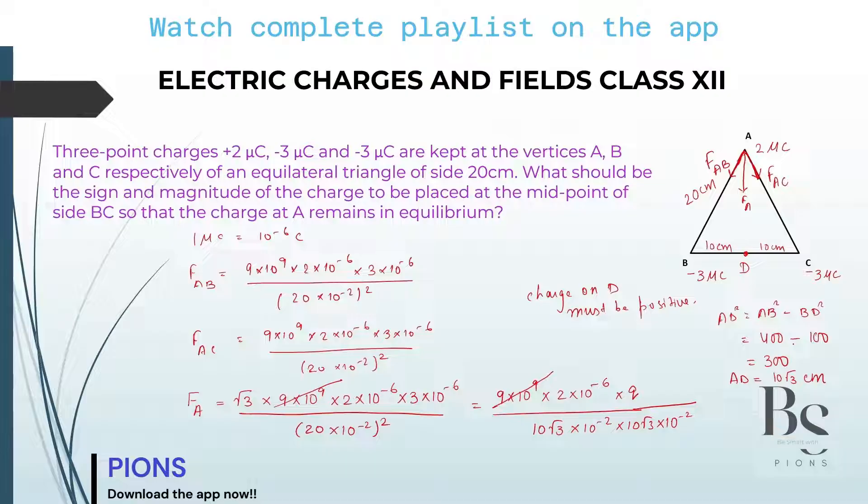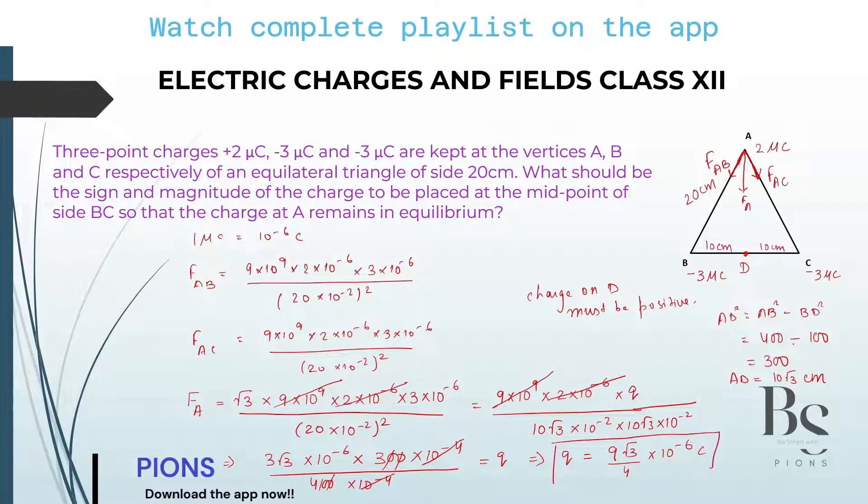Now let's cancel out the terms and find the magnitude of Q. This cancels with this. 2 into 10 to the power minus 6 cancels with 2 into 10 to the power minus 6. We left with 3 root 3 and let's take everything on the other side. 3 root 3 into 10 to the power minus 6 into the denominator on the left hand side. 10 root 3 into 10 root 3. It will be 100 into 3, 300, 10 to the power minus 4 whole divided by 400, 10 to the power minus 4 equals to Q. 10 to the power minus 4 cancels with this. 400 cancels. You left with charge which should be placed at D must be 9 root 3 by 4 into 10 to the power minus 6 microcoulomb.